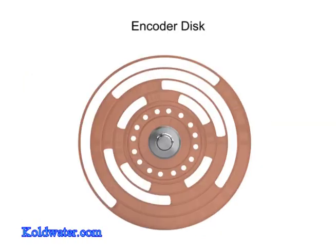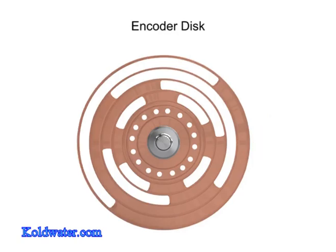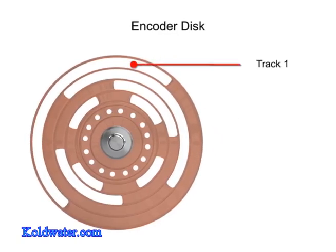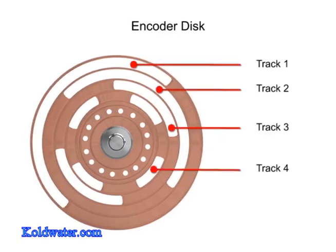The encoder disk consists of a series of opaque and transparent tracks mounted to a rotating shaft. The tracks of the disk are arranged concentrically around the center of the shaft. Photo detectors assigned to each track designate the resolution of the encoder. The higher the number of concentric tracks, the higher the accuracy.